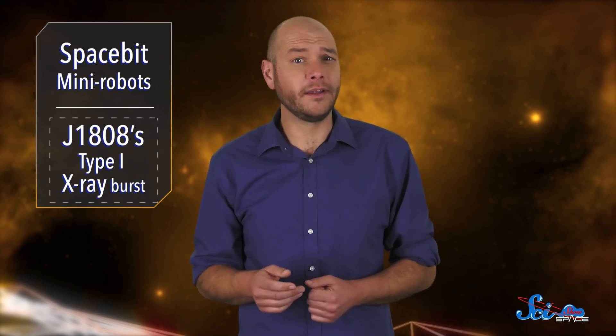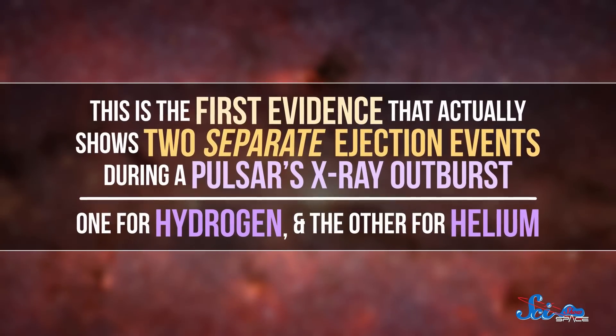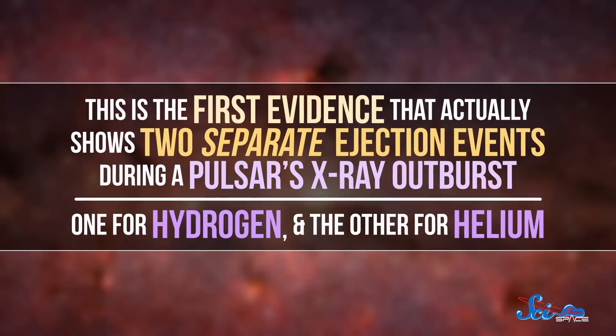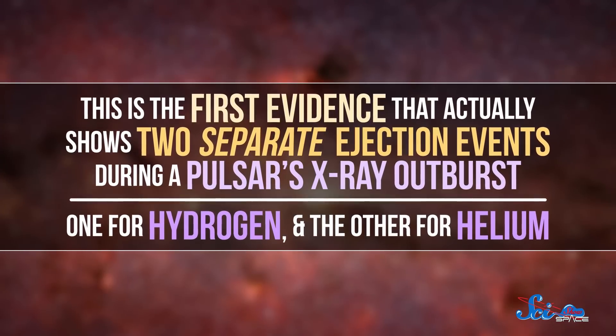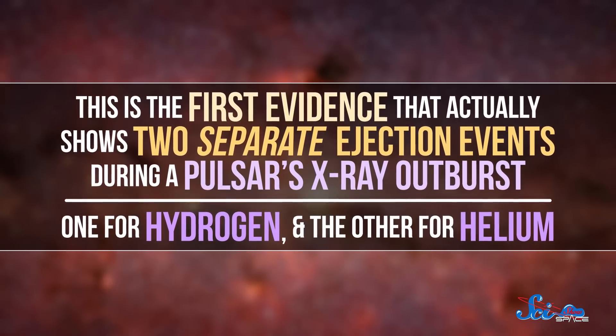But even though the event was short, it's significant. This is the first evidence that actually shows two separate ejection events during a pulsar's X-ray outburst. One for hydrogen, and the other for helium. By itself, that opens up the ability for astronomers to study the differences between these events and make sure they align with our models.